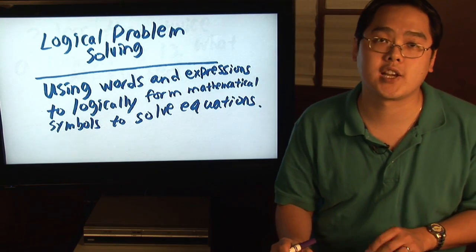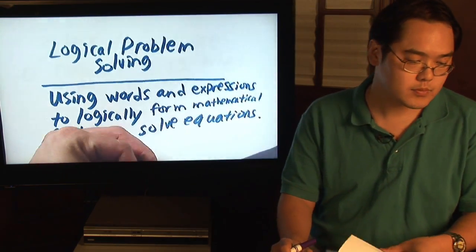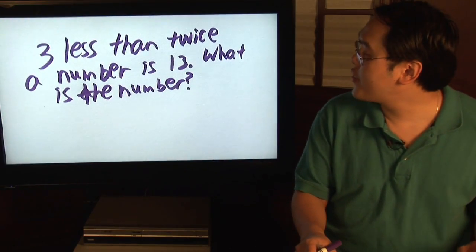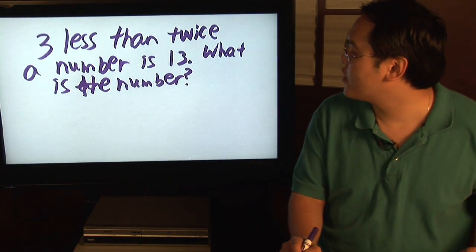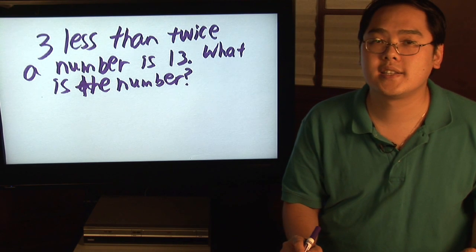So here's an illustration as to what this actually entails. Suppose you have this scenario: three less than twice a number is 13. What is the number?